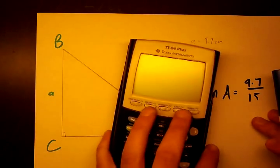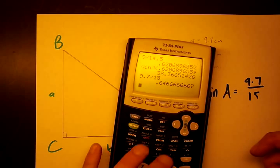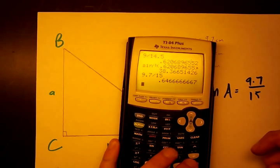So let's pull out our calculator. And let's see. 9.7 divided by 15 gives us 0.646666, about.